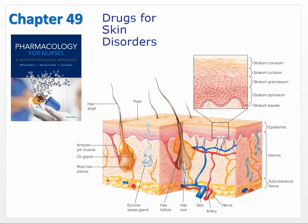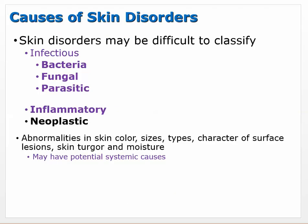This is chapter 49, drugs for skin disorders. There's going to be some overlap because we talk about fungicides in a different section, but this is going to focus only on skin. Skin disorders may be difficult to classify. Your book classifies them as infectious, inflammatory, or neoplastic. We're going to talk about infectious and inflammatory. We'll talk about cancer drugs later on.